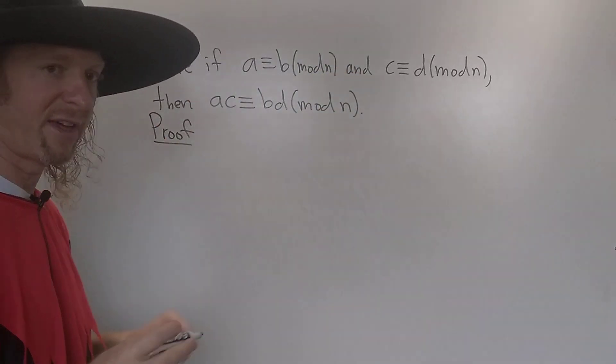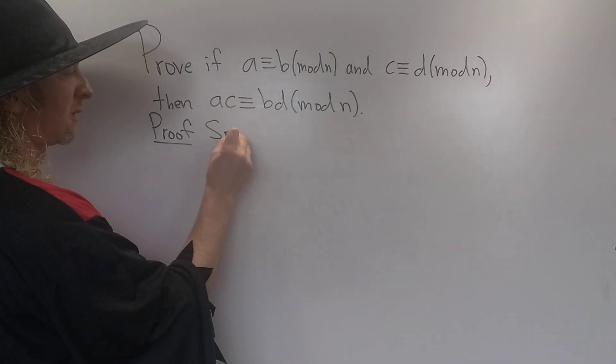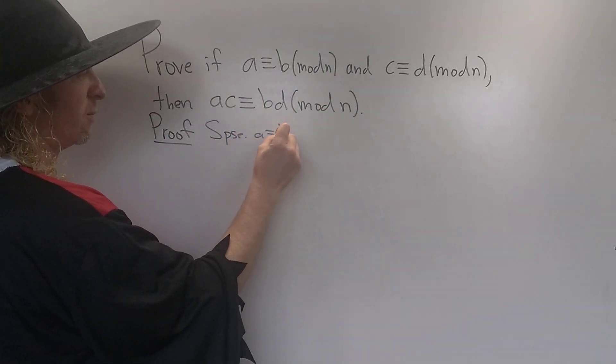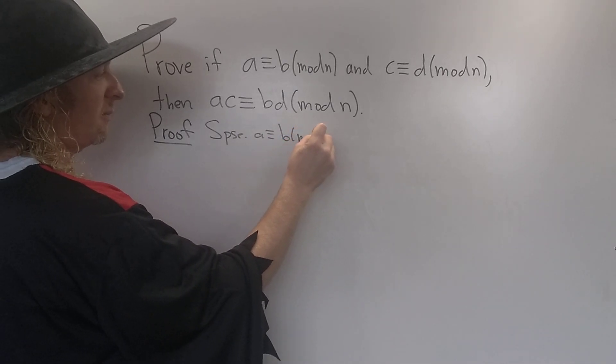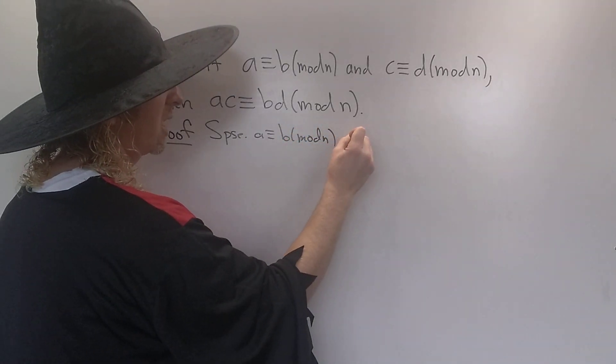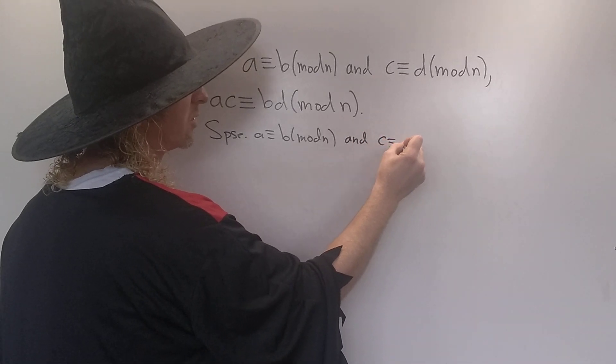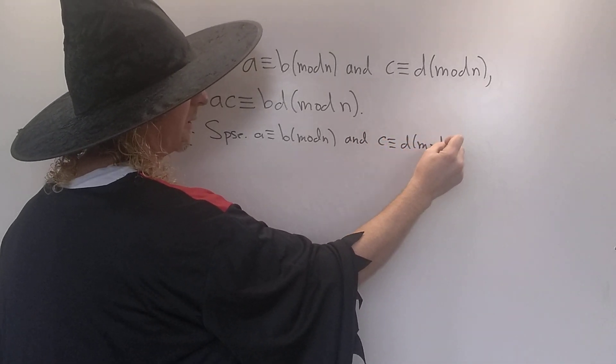So we'll suppose that we have that. So suppose that A is congruent to B modulo N, and C is congruent to D modulo N. Right?